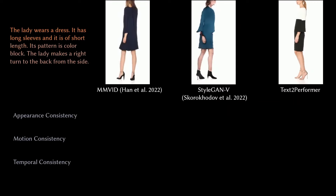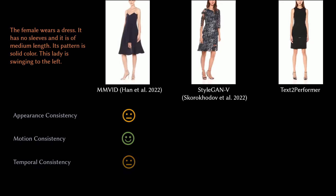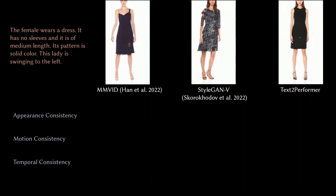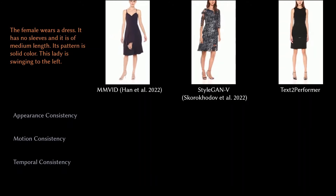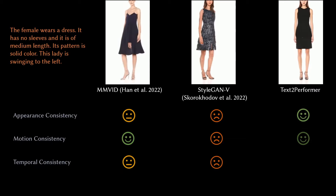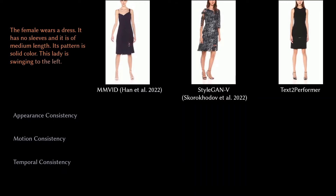In the next example, the female wears a dress with no sleeves, of medium length, with a solid color pattern, and the lady is swinging to the left. Again, Text2Performer has really thrown it out of the park — MM-WIT is just slightly okay, StyleGAN-V is just not cutting it, whereas Text2Performer has performed really well.